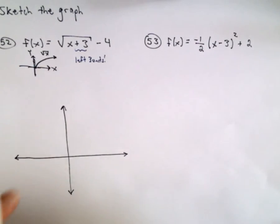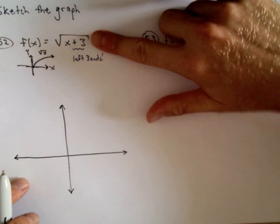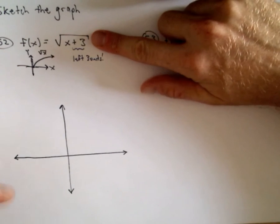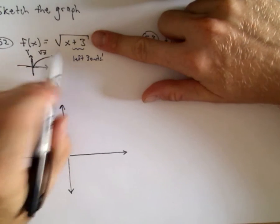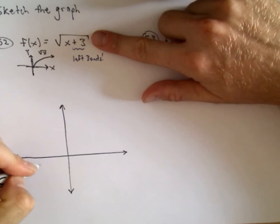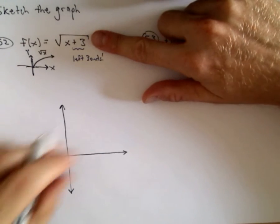And that kind of makes sense if you think about just having the square root of x plus 3 all by itself. Right, the square root of x plus 3, if you were to plug in negative 3, you would get 0. So that would kind of move it to the left, and then it would increase.